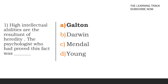First question: High intellectual abilities are the resultant of heredity. The psychologist who had proved this fact was dash. The four options are Galton, Darwin, Mental, Young. The answer is Galton.